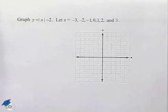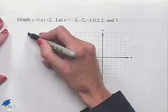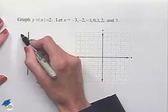Let x equal negative 3, negative 2, negative 1, 0, 1, 2, and 3. In order to solve this problem, we'll set up a chart where we're going to substitute in our given values.